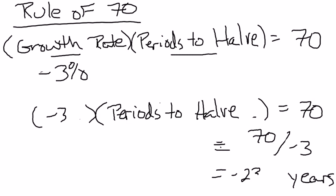And what we'd end up with is negative 23.3 years. So really when I did this calculation, what I should have said is take the absolute value, and so now divide by 3 and you'll end up with 23.3 years. So if something is shrinking at the rate of 3% a year, then in 23.3 years, it'll be half the value that it was when it started.